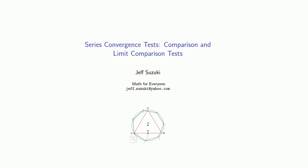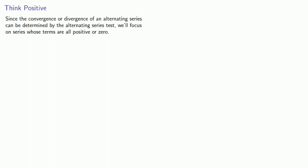One of the first important tests are the comparison and the limit comparison tests. We'll make a couple of simplifications. Since the convergence or divergence of an alternating series can be determined by the alternating series test, we'll focus on series whose terms are all positive or zero.